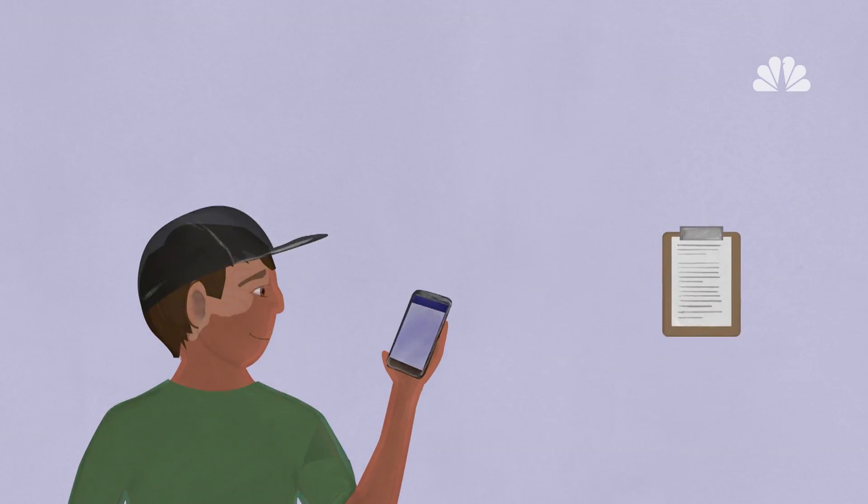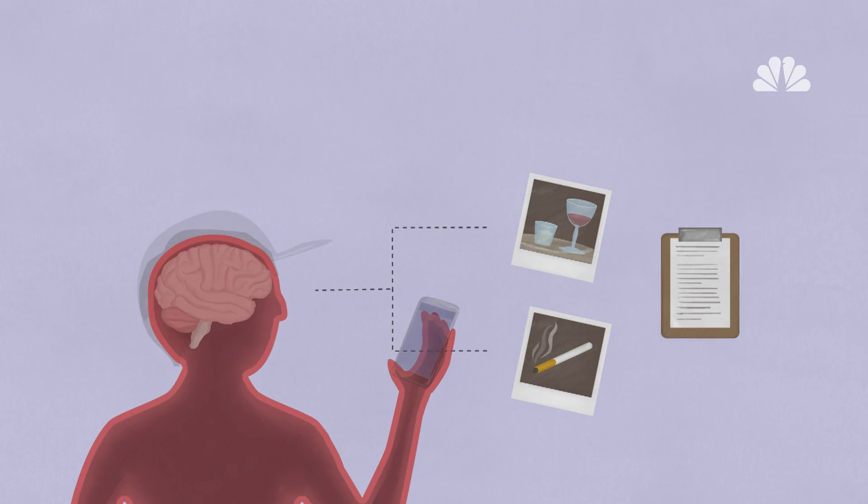And when they saw photos of risky behavior, like drinking and smoking, neural activity decreased in their cognitive control network, which aids in decision making.